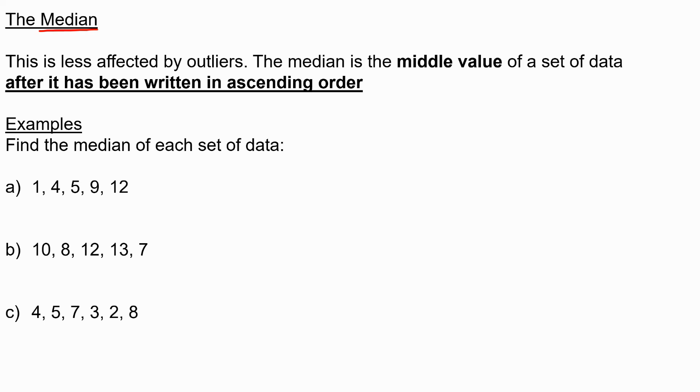So let's work out the medians of these set of data. The median is just the middle value when you put the data in order. And I always tend to do it in ascending order. So if we look at the first example, the data is already in order. To find the middle, I cross off the ends and work my way in. And I can see that the middle value is 5. So that's our median.